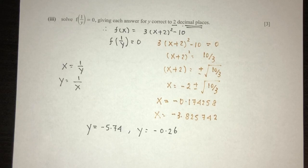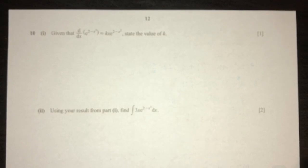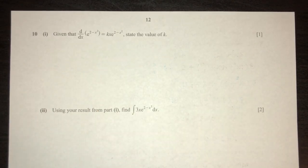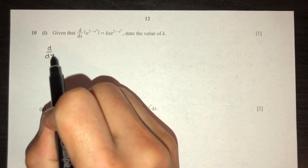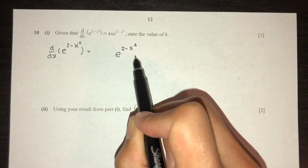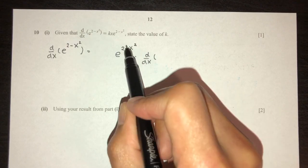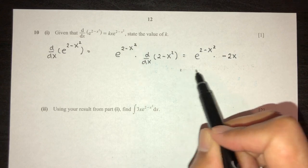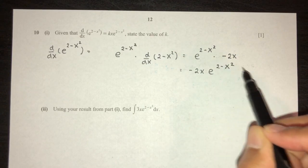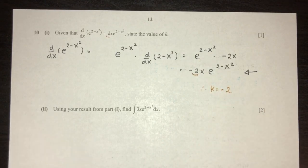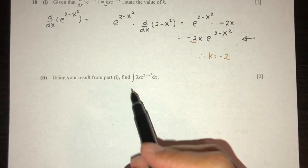Let's move on to question number ten. Given dy/dx equals this expression, find the value of k. Differentiating e^(2 − x²): write down e^(2 − x²), then multiply by the derivative of the power (2 − x²), which is −2x. So dy/dx = −2x · e^(2 − x²). Comparing, k = −2.